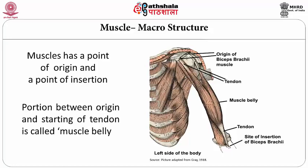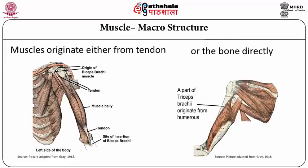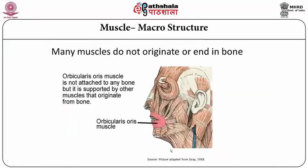The portion between the origin and the start of the tendon is called the muscle belly. The muscles originate either from tendon or from bone directly, but they have to end in the bone through a tendon or some kind of tendinous structure, which is generally called an aponeurosis.